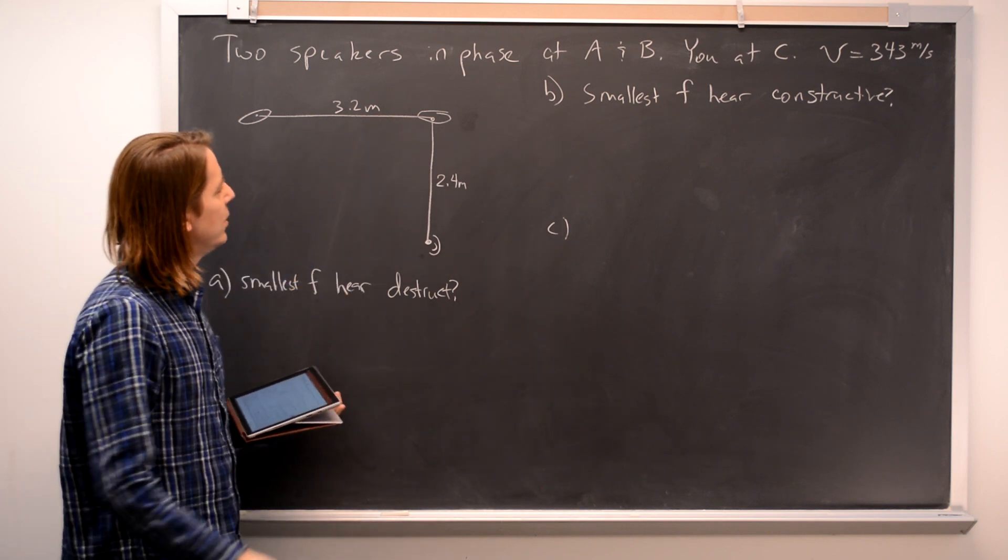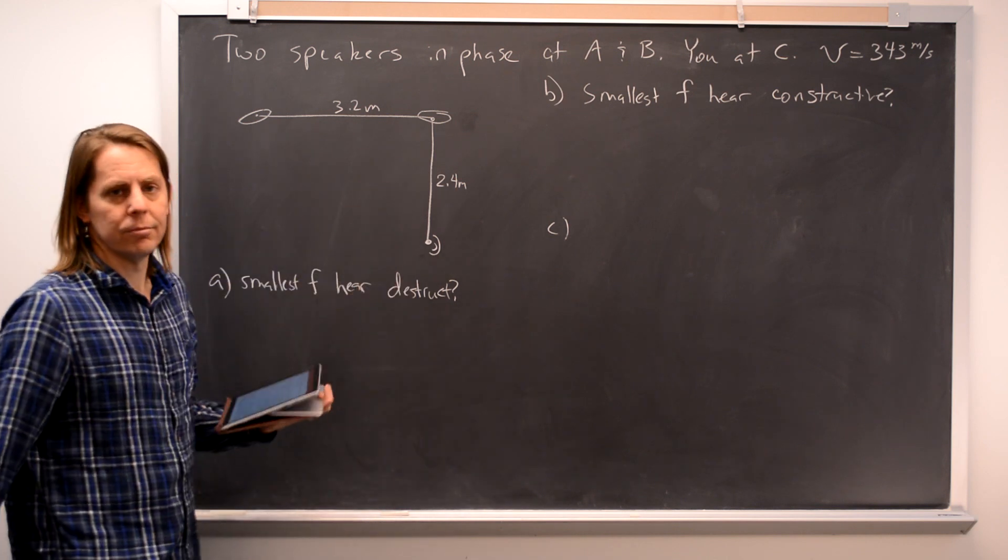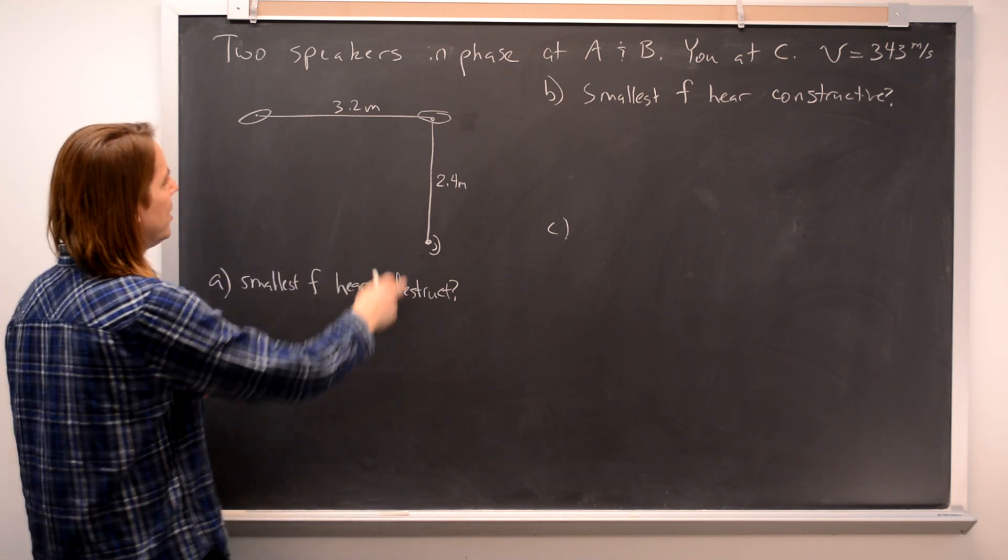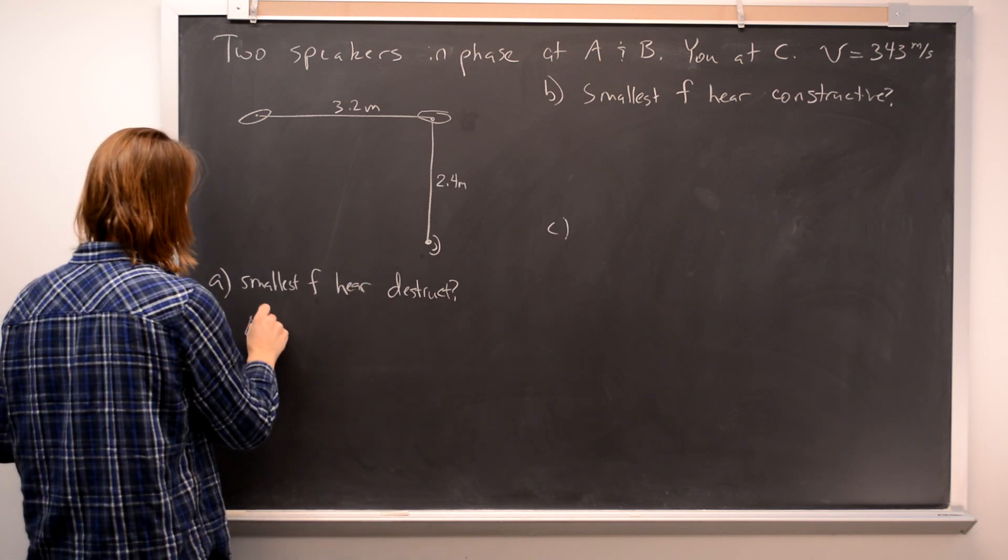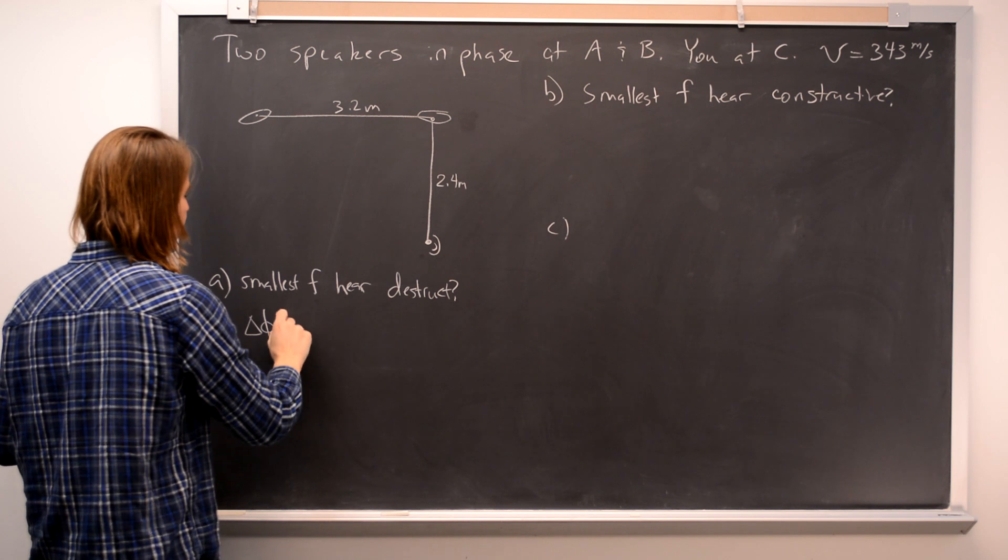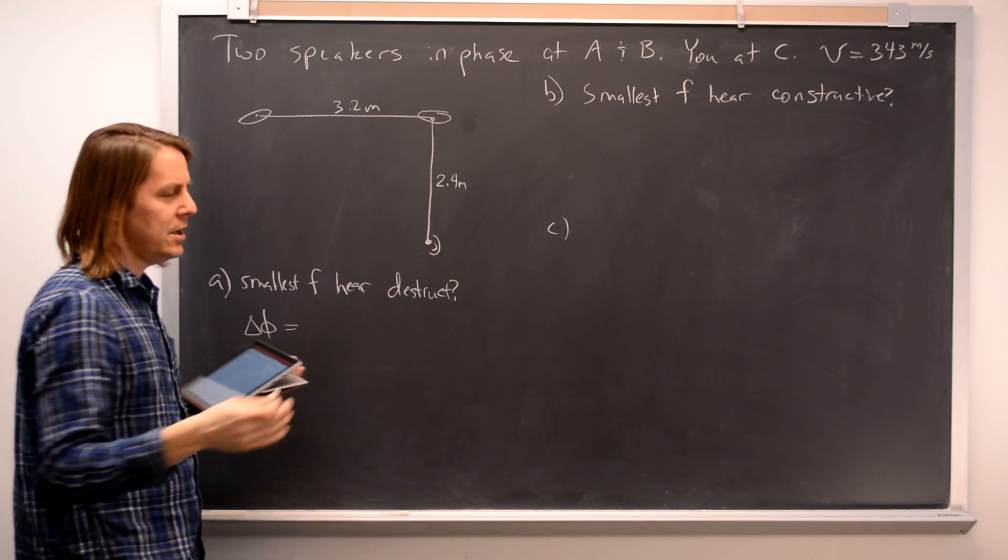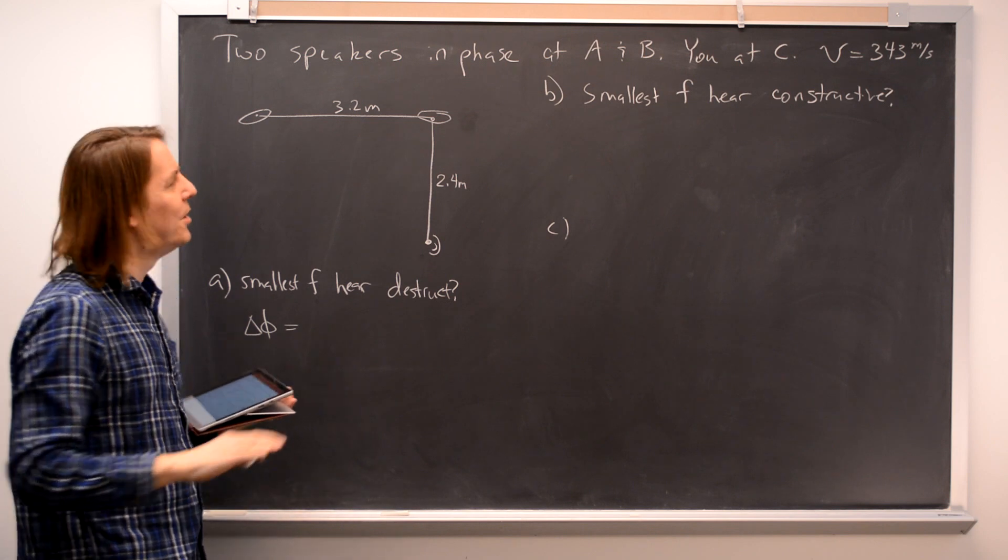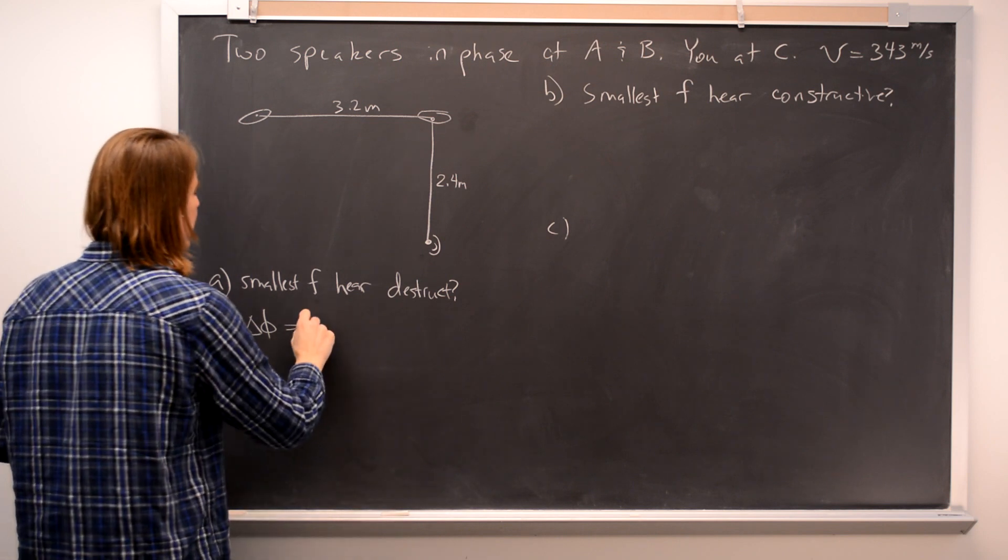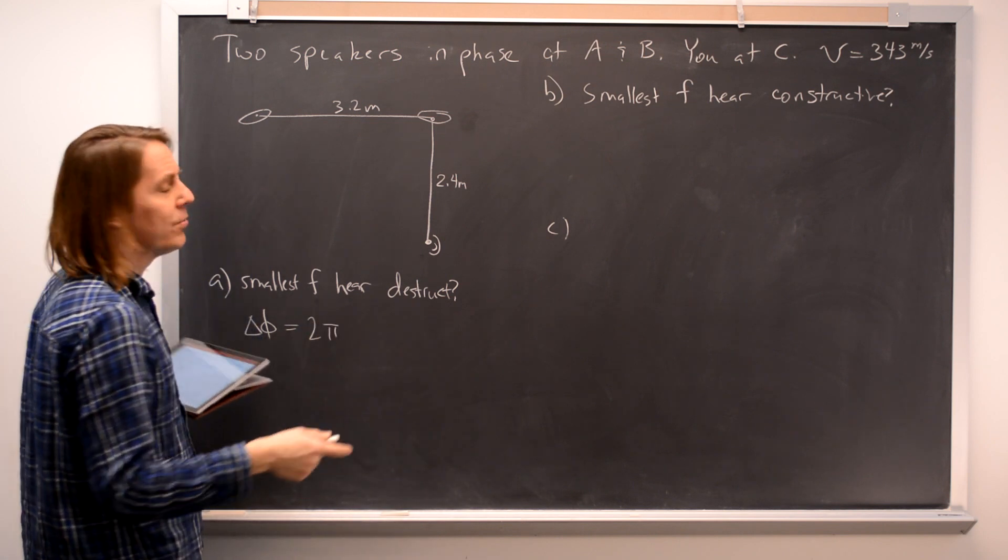So it's really the first part is just an interference problem. You've got to set up our standard equation. We want the change in phase between these two when they arrive to be, let's see, when it's destructive, we'll get to that part in a minute. First, let's see what it's going to be. So it's 2π times the difference in path.